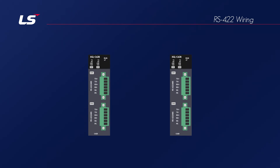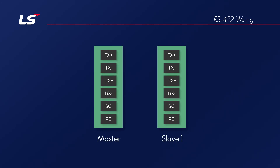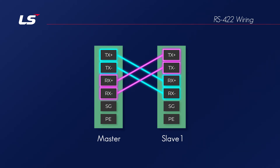RS-422 is a full duplex communication method in which the transmission line and the reception line are separated. For RS-422 one-to-one communication, you need to wire TX+ and TX- (the transmission signals of the master) to RX+ and RX- of the slave. The slave's TX+ and TX- signals must be wired to the master's RX+ and RX-. The signal ground SG and frame ground PE should be connected one-to-one.